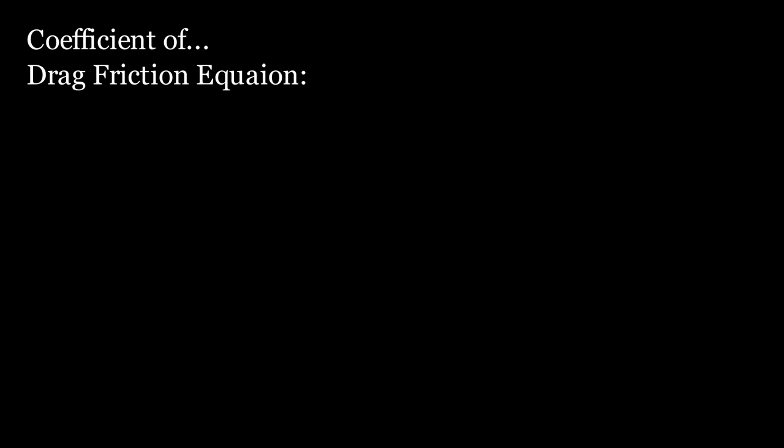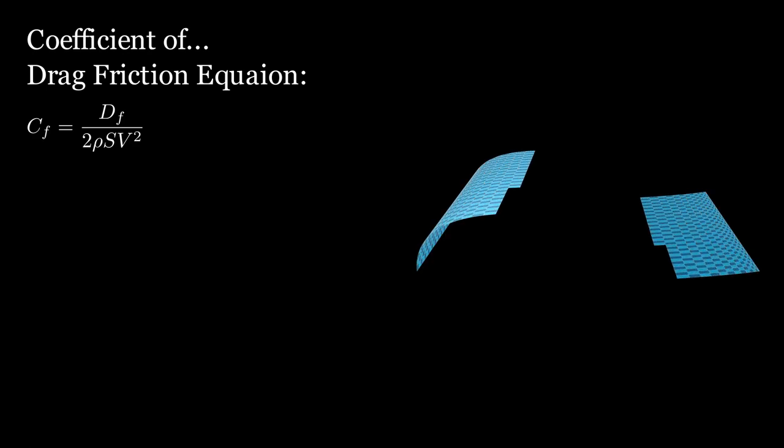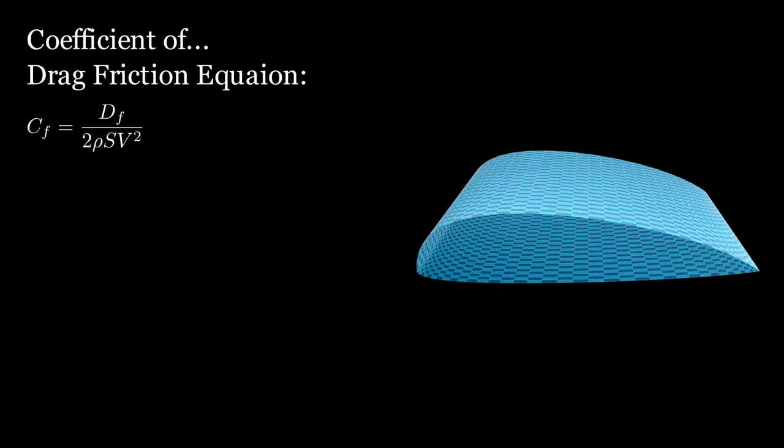Well, it turns out this coefficient is defined by the equation CF equals drag the airfoil experiences divided by 2 times the density times surface area times velocity squared. And the surface area in concern here is the full surface area of the wing. Now we can rearrange this to find that the drag is equal to 0.5 times the coefficient of friction times density times the surface area times velocity squared.